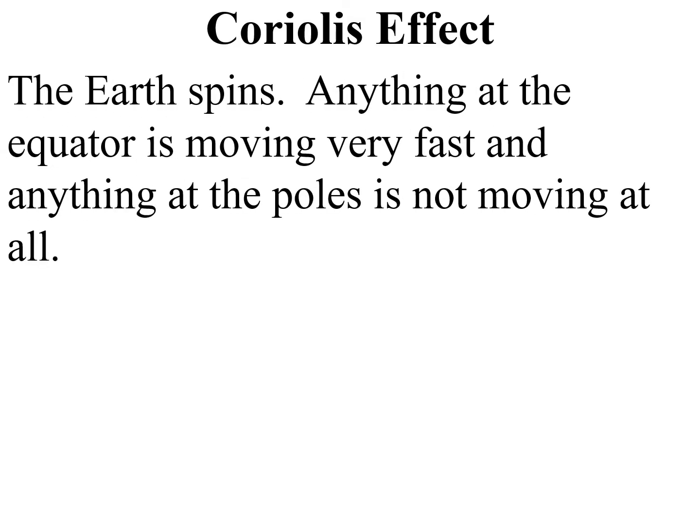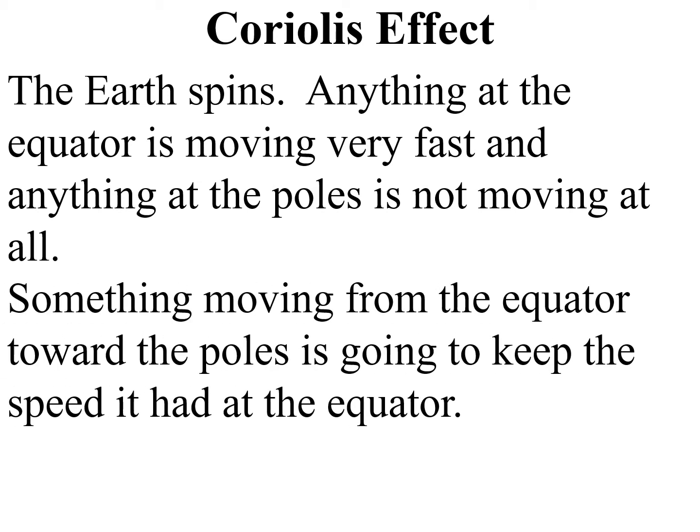Because the earth spins, we have to deal with something called the Coriolis effect — often called the Coriolis force, but it's really not a force, it's an effect. Anything at the equator is moving very fast; anything at the poles is not moving at all — this is why the effect occurs. Something moving from the equator towards the poles is going to keep that incredible speed of a thousand miles an hour, even though now it's moving over lands that aren't moving as fast.